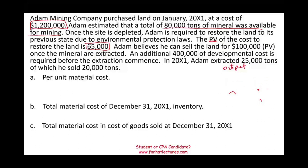Adam also believes he can sell the land for $100,000 once the minerals are extracted — again, given as present value. An additional $400,000 of developmental cost is required before extraction commences, meaning Adam needs to incur additional costs to get the site ready. In the first year, Adam extracted 25,000 tons, of which he sold 20,000. The first question is: compute the per unit material cost — what is the cost per one ton?